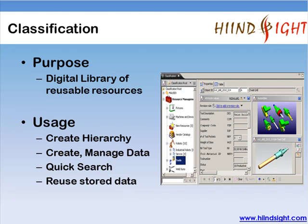Then comes Classification, which is essentially a one-stop shop — a digital library for all reusable data. By reusable data, we refer to tools, resources, process plans, specs, templates, and much more. Classification is a placeholder for all reusable data. In this application, we can store data in a hierarchical structure format, making it much easier and faster to search and then reuse this data in future projects and programs.